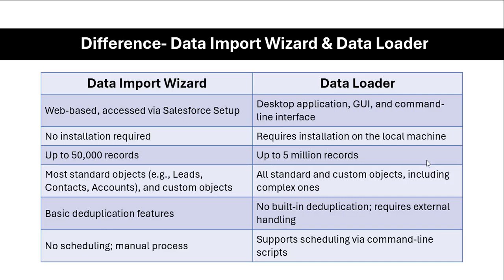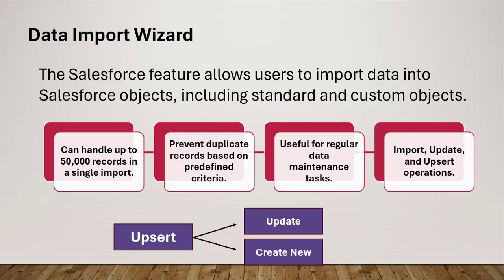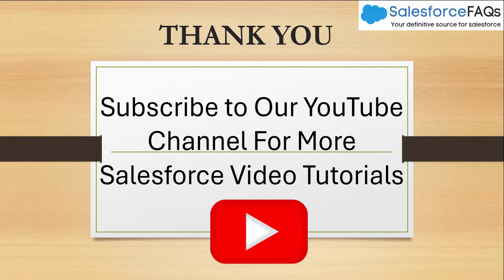Here is the difference between the Data Import Wizard and the Data Loader — both are used for data manipulation operations. The Data Import Wizard is web-based and accessed through Salesforce Setup, while the Data Loader is a desktop application that requires download and installation. The Data Import Wizard supports up to 50,000 records; the Data Loader supports up to 5 million records. The Data Import Wizard supports only select standard objects and all custom objects; the Data Loader supports all standard and custom objects. Finally, the Data Import Wizard does not support scheduling, while the Data Loader does.